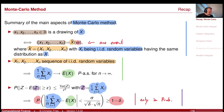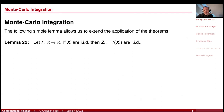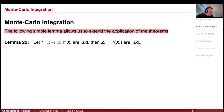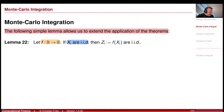Now I'd like to use this to build an integration rule. The following lemma allows us to extend these results. If you have a given function f from ℝ to ℝ, and Xᵢ are IID random variables, then f(Xᵢ) is also a sequence of IID random variables.